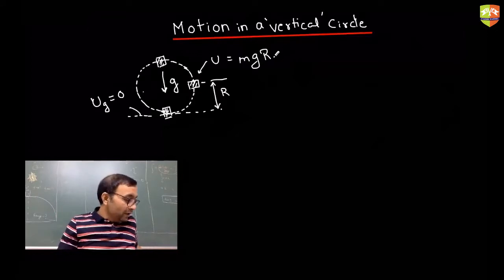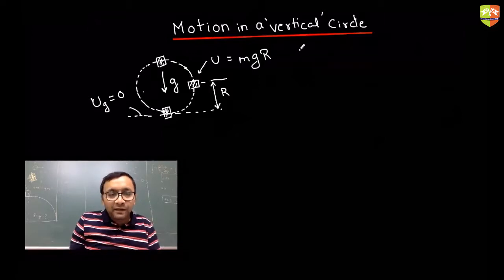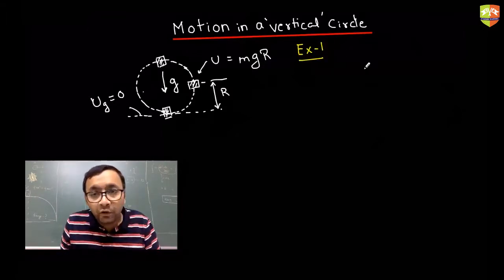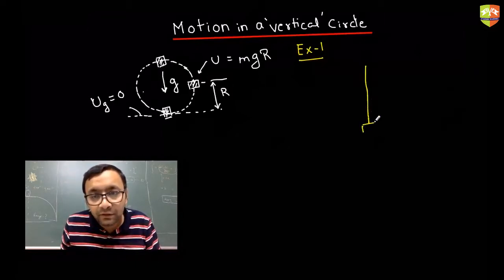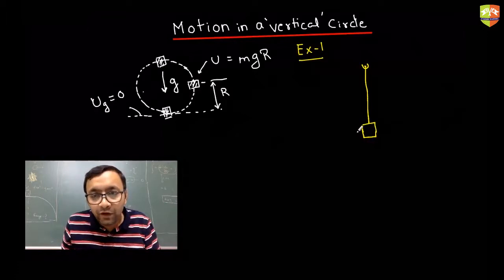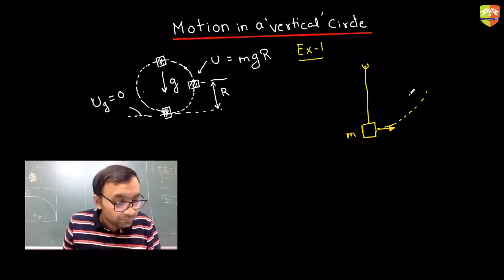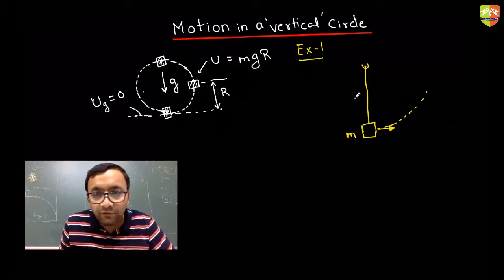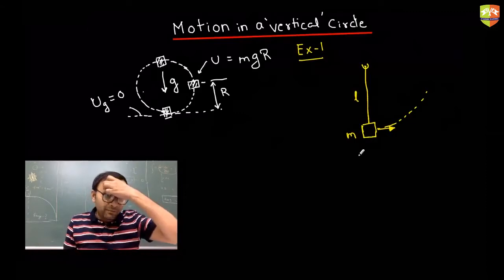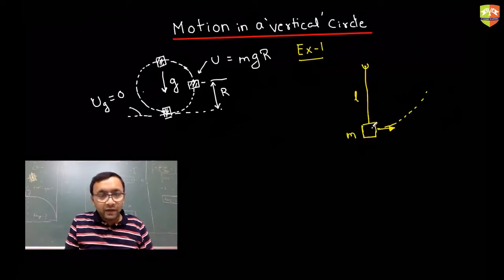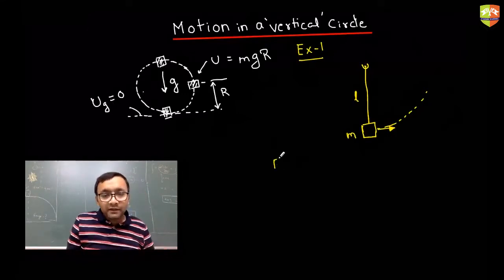There are many examples of motion in a vertical circle. Example one is the string and mass — if you give a mass m a velocity, it will move in a vertical circle. This is like a pendulum, except a pendulum oscillates while here the object goes in a complete vertical circle.